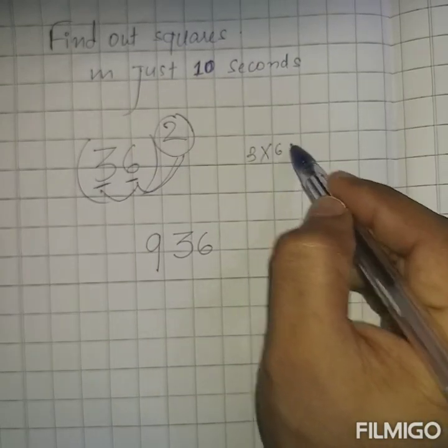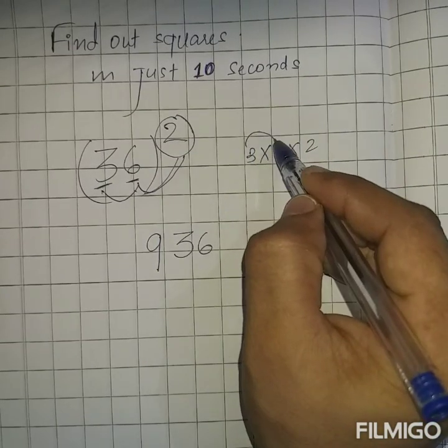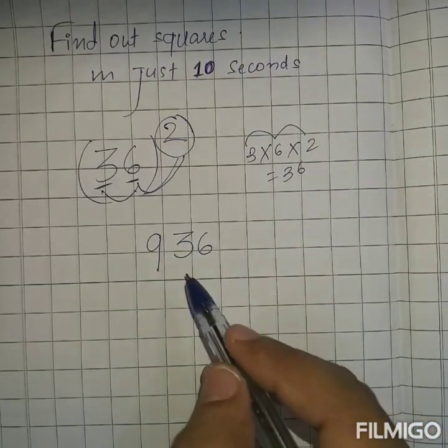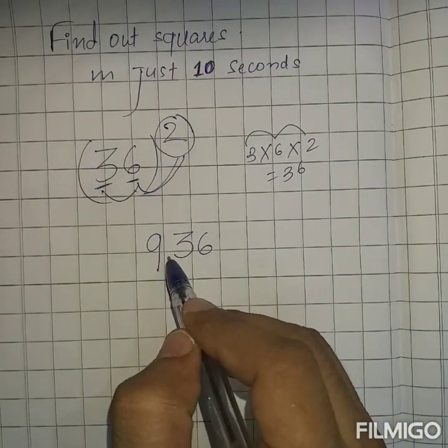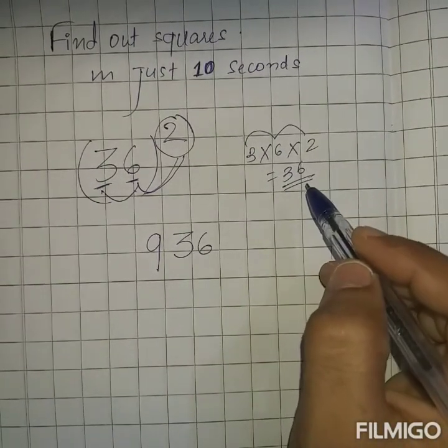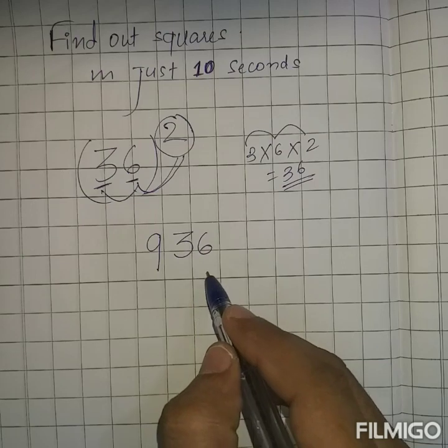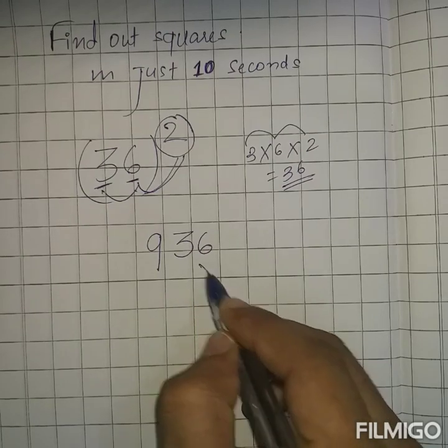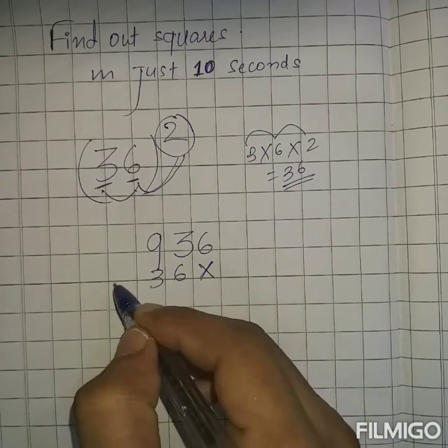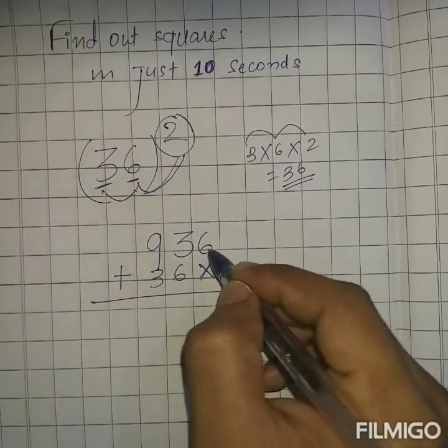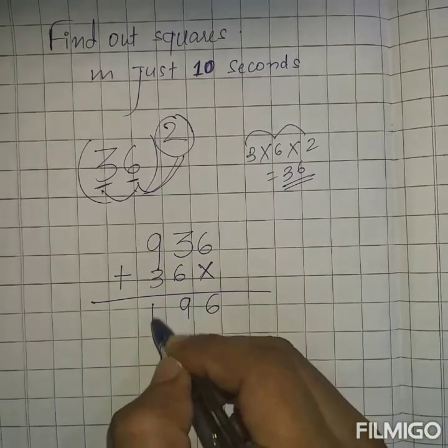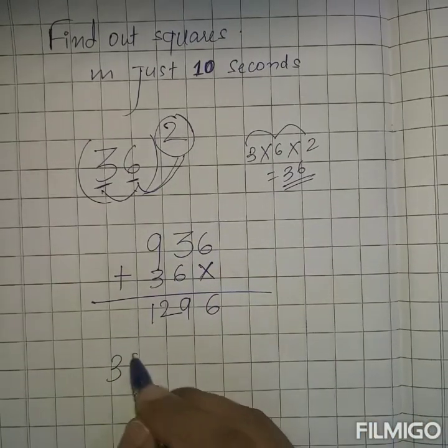Now this is the first part of the answer and second part: you will write this multiplication answer here but leave one place and then write. So 36 you'll write and then do the addition. 6 + 3 = 9 and 9 + 3 = 12. So square of 36 is 1296. You can verify this.